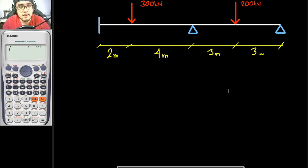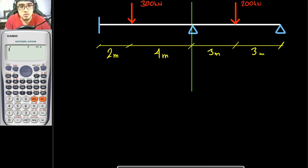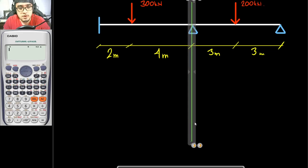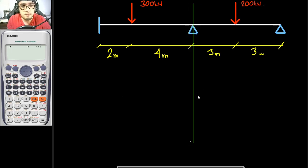So if you would be having 3 spans, you would be dividing it by 3. In this case, this would be a span of 2, so I would be dividing this into 2 spans. After which, I would individually draw their collapse mechanisms.